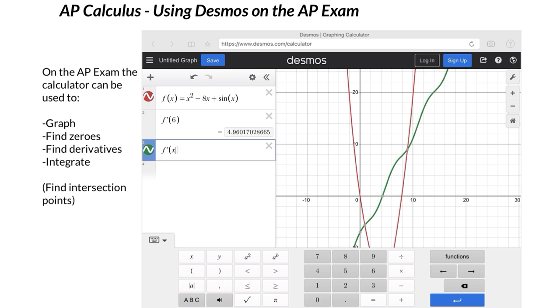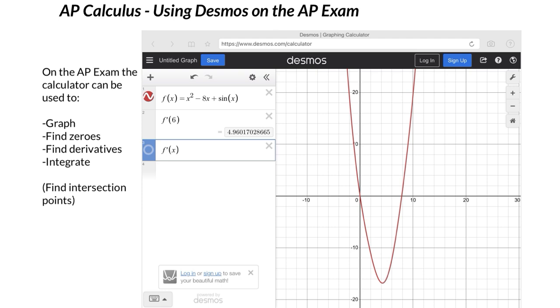We've graphed, we found zeros, we found the derivatives. Now let's say we wanted to integrate. By the way, if you press the little green thing, it takes that graph away.